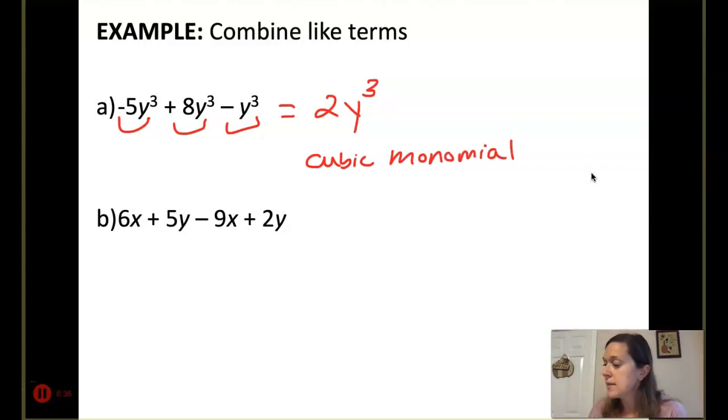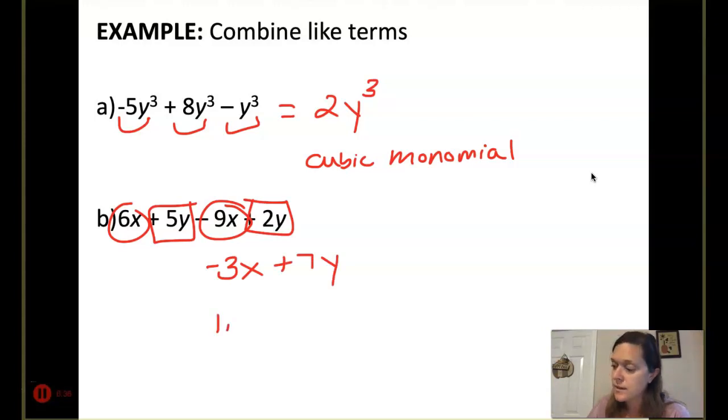For part b, combining my x's, we get 6 minus 9, so negative 3x. Combining my y's, 5 and 2 makes 7y. If I had to classify it, my highest degree is 1, so that's a linear binomial. For standard form, you write highest degree to smallest. When we have multiple variables, usually you put them in alphabetical order. So x comes before y.